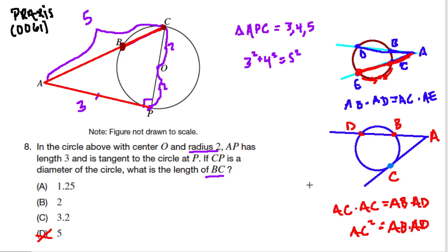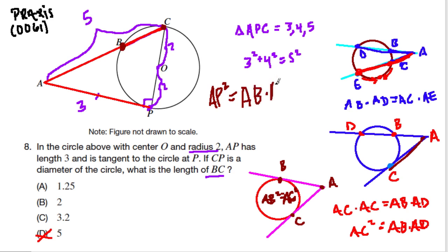And if we had two tangents, say right over here, this could be helpful in other questions if they ask it, and we label our points A, B, and C, well then AB squared equals AC squared. And that's actually very helpful to us in this problem because we have this, AP. That's like AC over here. It's a tangent line. And so AP squared equals what? Well, we have the secant line, so it equals AB times AC.